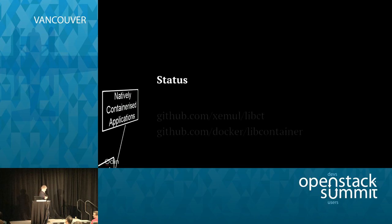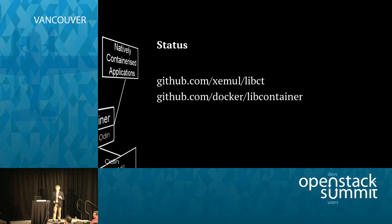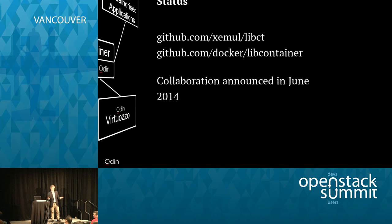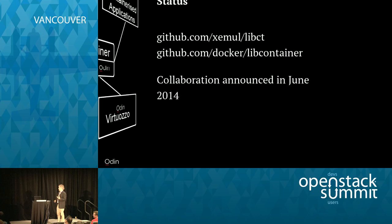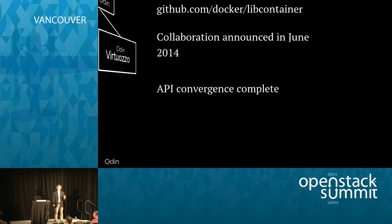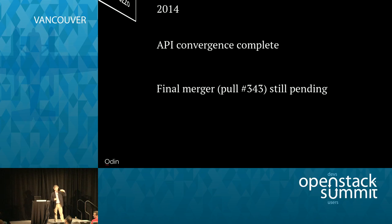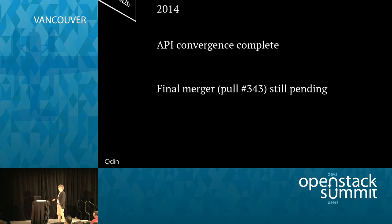There are two GitHub repositories you can look at: libct is ours, libcontainer is Docker's. We announced a collaboration between Docker and Parallels in June 2014. Since then, we have managed a complete API convergence — the API of libct and libcontainer is now identical, modulo the various calling problems with Go. The next step is replacing the direct call from Go into the kernel system calls and putting libct, the C library, underneath it, so Docker's libcontainer effectively becomes Go bindings for the C library. There's already an outstanding pull request for doing this, and it's nearly complete.